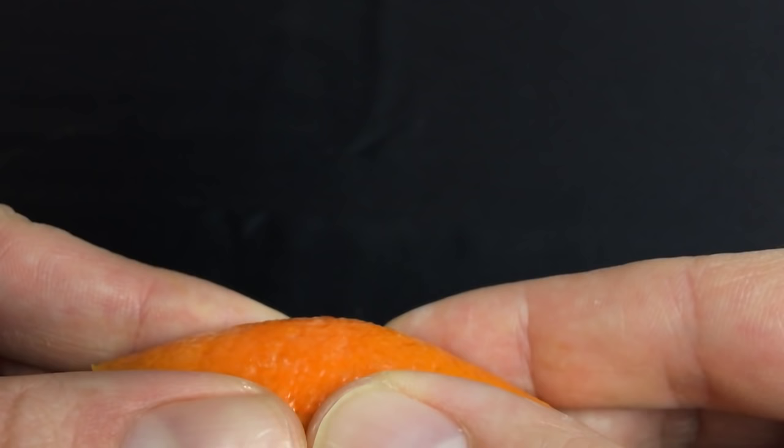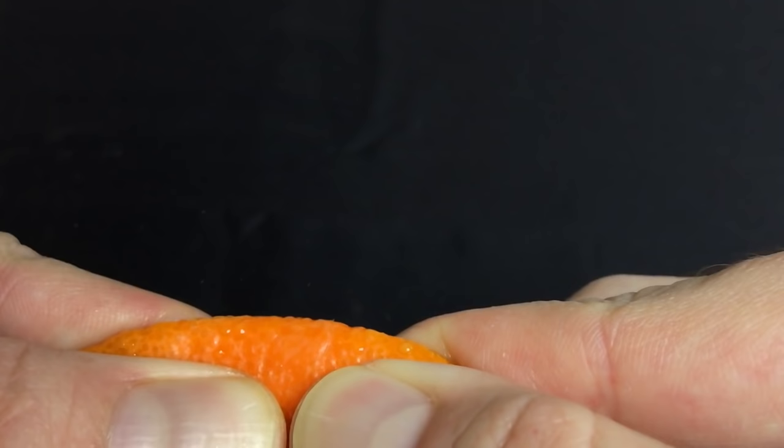So an orange peel has a lot of little pores in it, and these contain orange oil. And when you squeeze the peel in the right way, those oils get expressed.